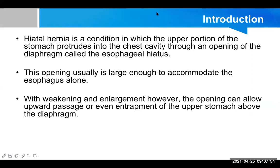Hiatal hernia is a condition in which the upper portion of the stomach protrudes into the chest cavity or thoracic cavity through an opening of the diaphragm called the esophageal hiatus, through which the esophagus passes from the thoracic cavity into the abdominal cavity. This opening usually is large enough to accommodate the esophagus alone, but in certain situations, because of the weakening and enlargement of that opening, some other extra organ or tissue may also pass above — this is known as hiatus hernia.